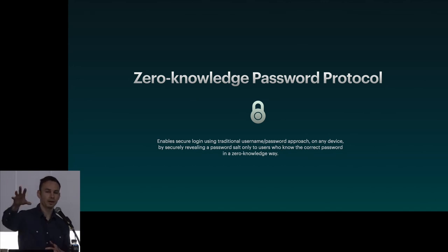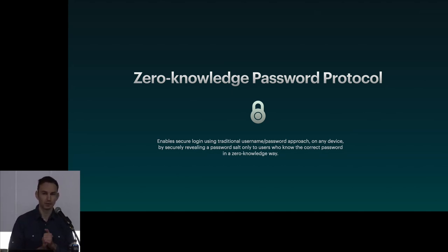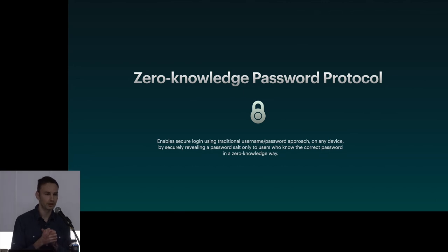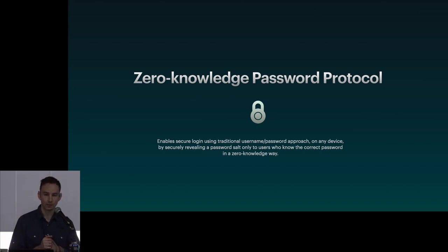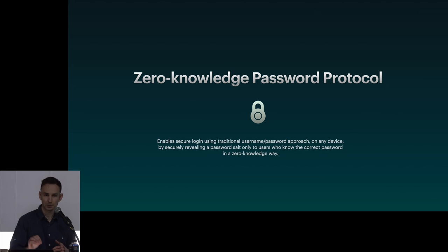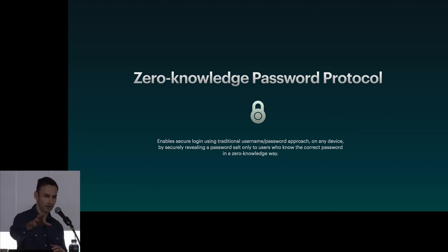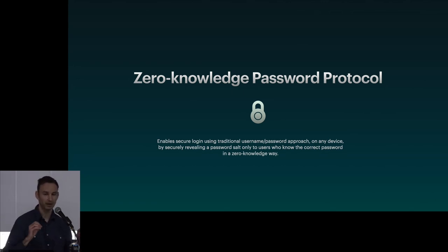In order to recreate the username and password experience, we have a sub-protocol called the zero-knowledge password protocol. This allows us to retrieve a salt from the server — when a user creates a password, we use a password salt along with their password to generate the private key. We want to make sure this salt is only known to the user and the server. So Shelter Protocol's zero-knowledge password protocol allows the user to prove to the server that they know the password without telling the server what that password is. The server doesn't know the user's password, but knows that the user knows it, and can then send the user their password salt.